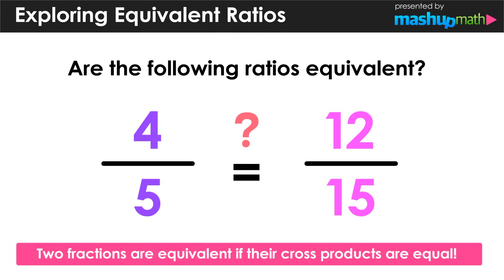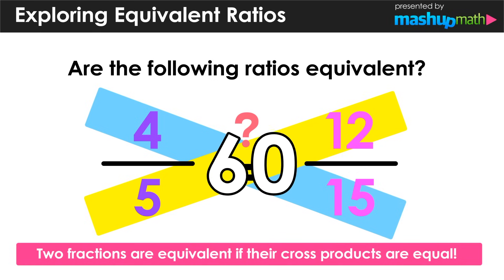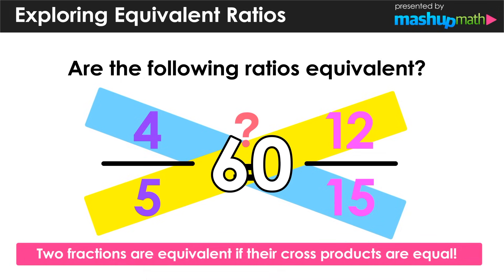Let's start by cross multiplying. We'll begin with 5 times 12, which equals 60. Then we'll find our second cross product by multiplying 4 and 15, and that product is also equal to 60. Notice that in this case, our cross products were equal.